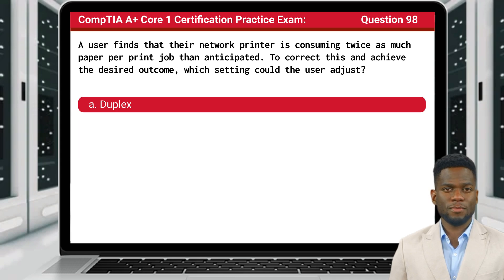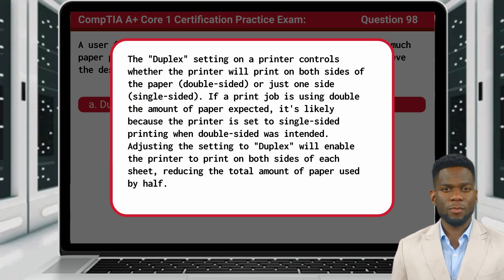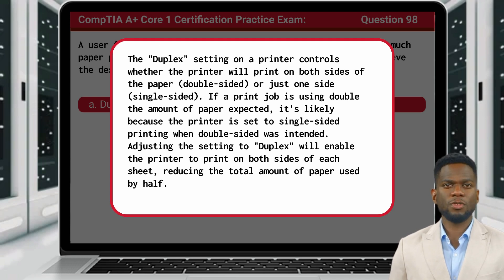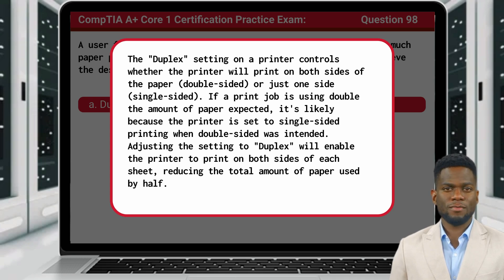The answer is A. Duplex. The duplex setting on a printer controls whether the printer will print on both sides of the paper, or just one side. If a print job is using double the amount of paper expected, it's likely because the printer is set to single-sided printing when double-sided was intended. Adjusting the setting to duplex will enable the printer to print on both sides of each sheet, reducing the total amount of paper used by half.